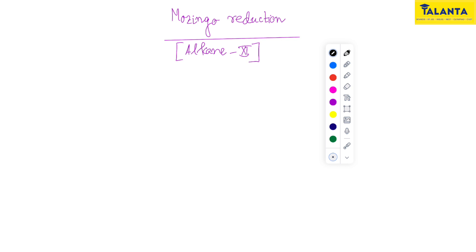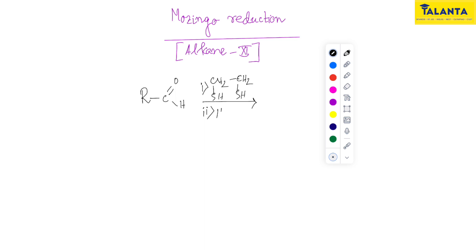In Class 12, there are carbon compounds and their chemical properties. This reaction is called Mozingo Reduction. It involves a cyclic 1,2-dithiolane, using hydrogen and a nickel catalyst.